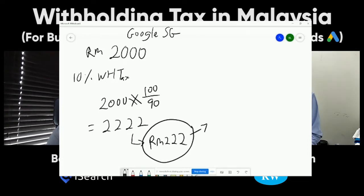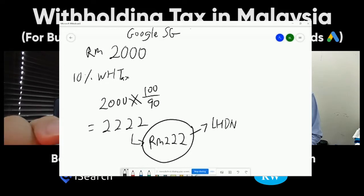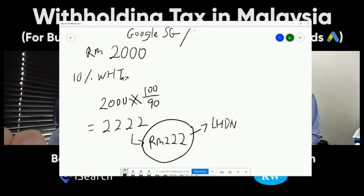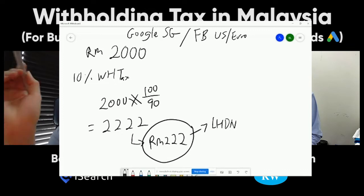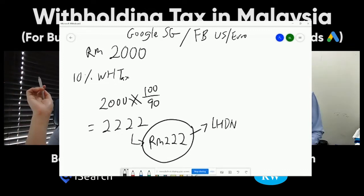For Facebook, which is registered in the US, the same 10% rate applies — a similar concept. You cannot deduct from the Facebook invoice because if you don't pay them the full amount, they won't provide the service. So the service recipient has to bear this withholding tax.